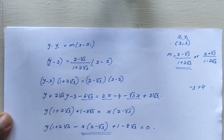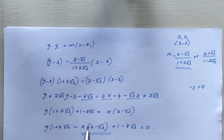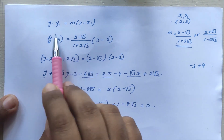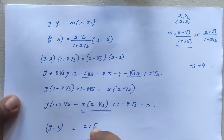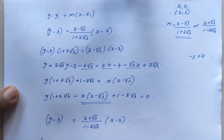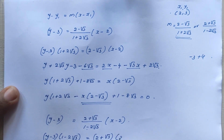So this is one equation of the line. For the second case using slope M1 = (2 + √3) / (1 - 2√3) with point (2,3): y - 3 = [(2 + √3) / (1 - 2√3)] * (x - 2).